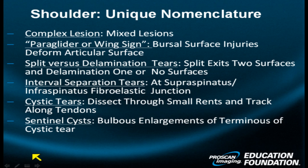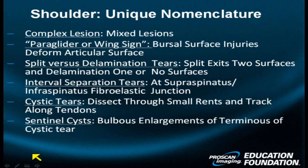The paraglider, or wing lesion or sign — a bursal surface lesion that deforms the surface of the rotator cuff so that it bunches up and forms a wing-like or bird-like structure.